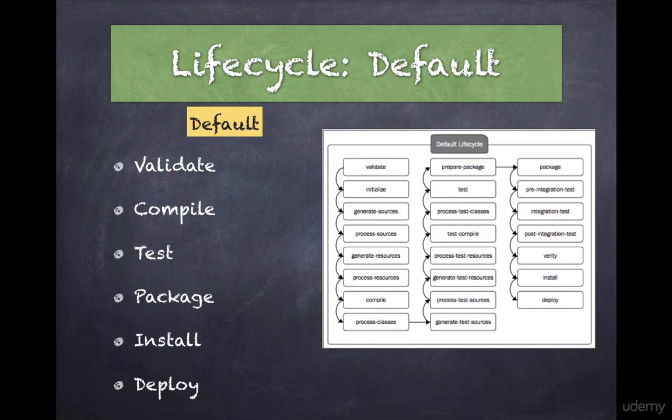Maven has three build lifecycles. The first one is called the default lifecycle, which handles the compiling, packaging, and deployment of a Maven project. To better understand the build lifecycle and its phases, let's take a look at some of the phases associated with the default lifecycle.